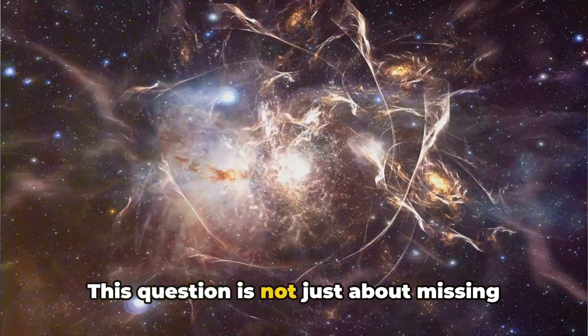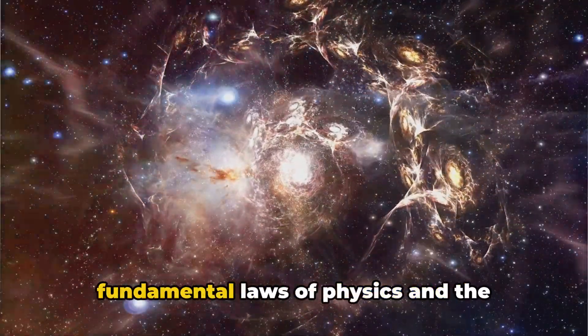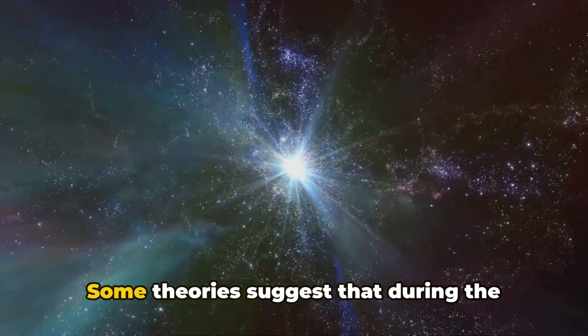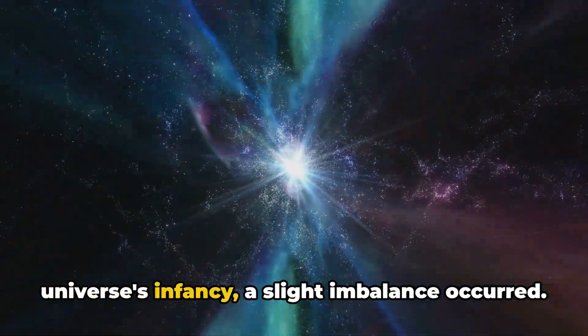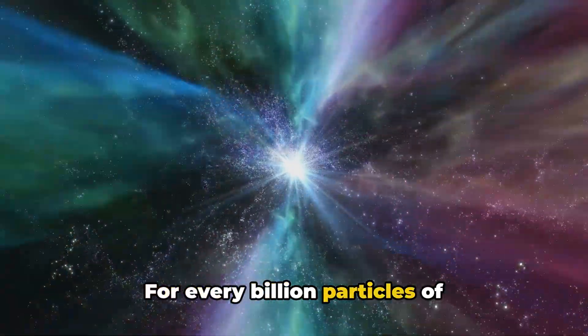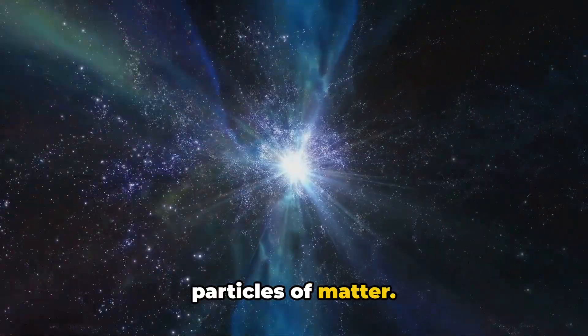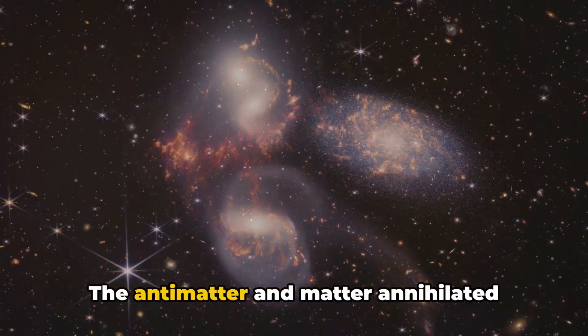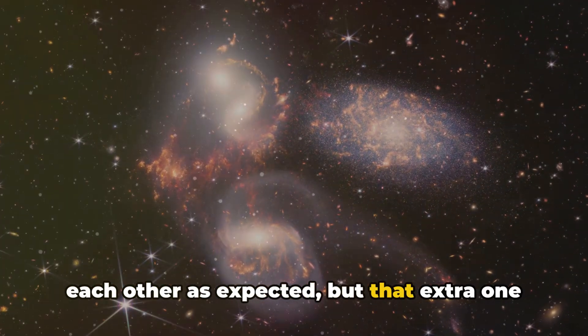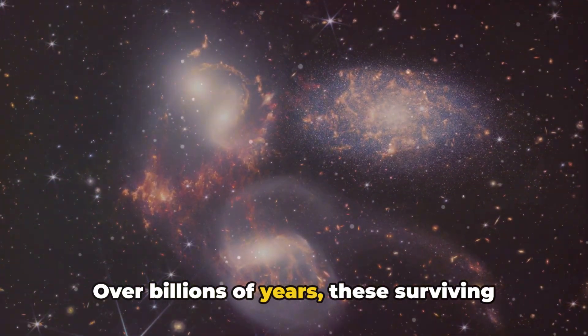This question is not just about missing particles, it's about understanding the fundamental laws of physics and the universe itself. Some theories suggest that during the universe's infancy, a slight imbalance occurred. For every billion particles of antimatter, there were a billion and one particles of matter. The antimatter and matter annihilated each other as expected, but that extra one matter particle for every billion persisted.